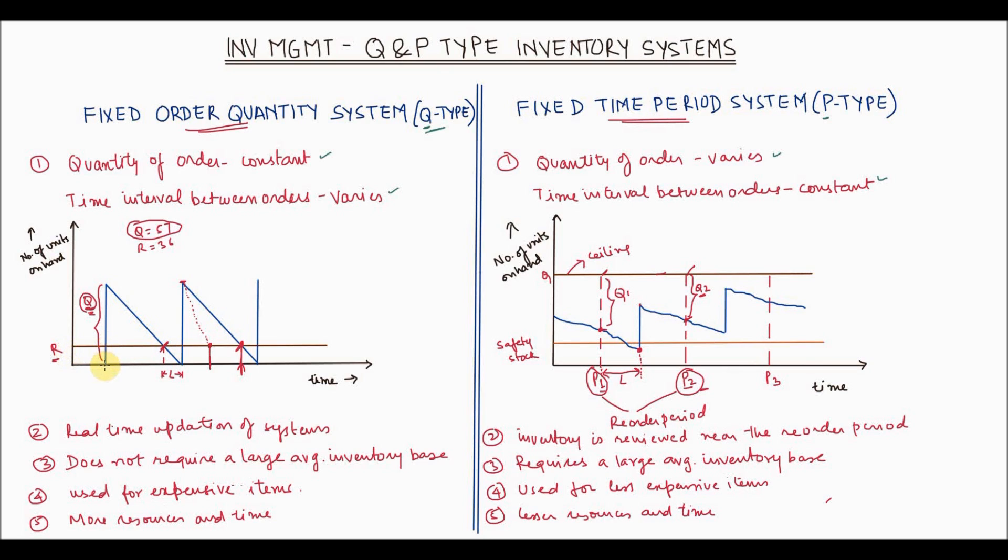Let's say you order quantity Q. Basically your inventory will reach this level. Now as time progresses and as there is demand coming from the customers, your inventory will keep on reducing. Now when it reaches this reorder point, that means the inventory that you hold is at this point, another order of quantity Q is placed on the vendor.